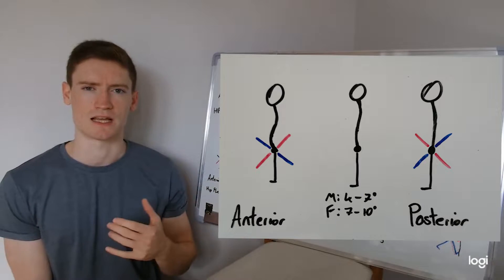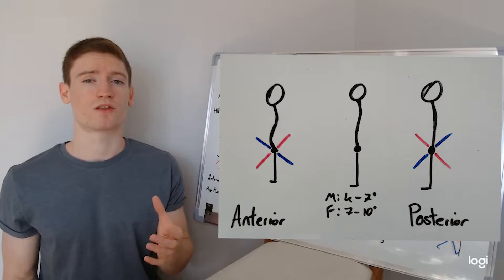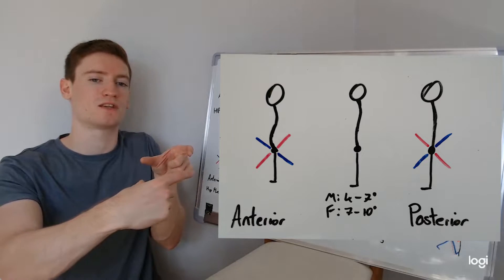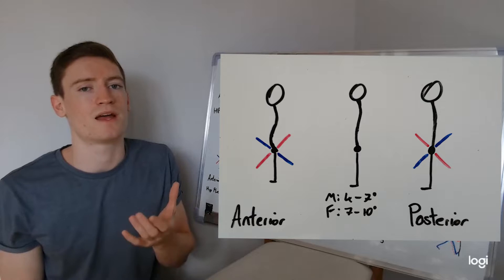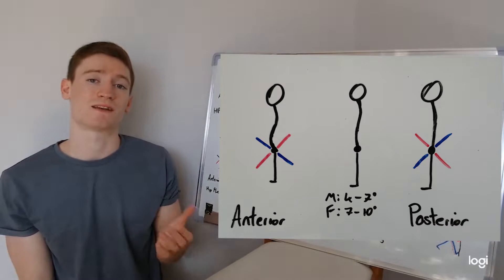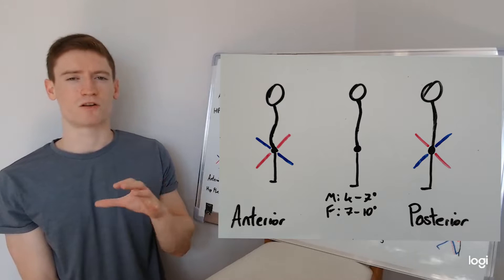Getting into that, we'll just dive down here to this next picture. The general rule of thumb in terms of that tilt is we should have that ever so slight anterior tilt, so slight tilt forwards. Not very much. For males, it's four to seven degrees of tilt. For females, it's seven to ten degrees of tilt.